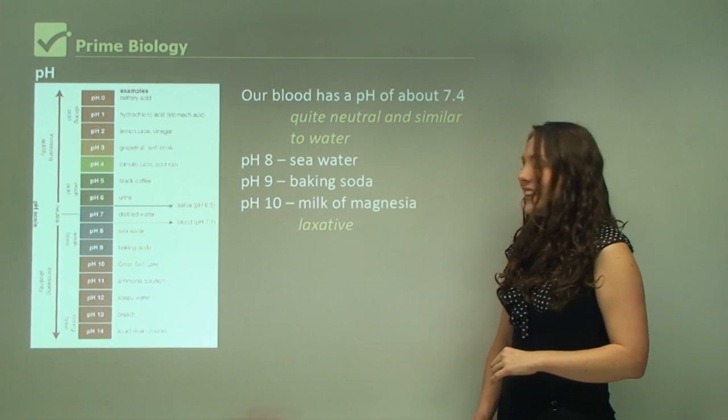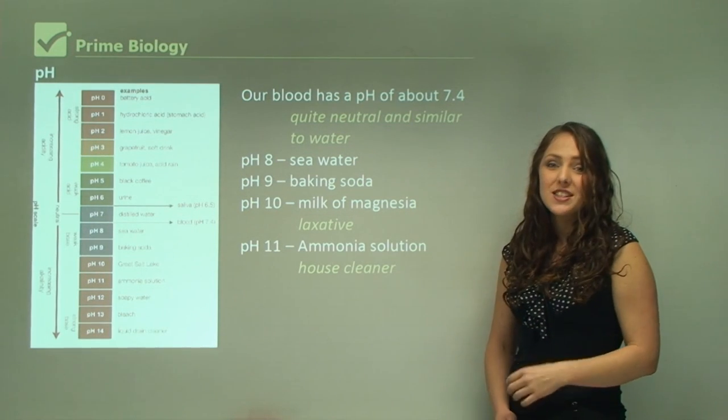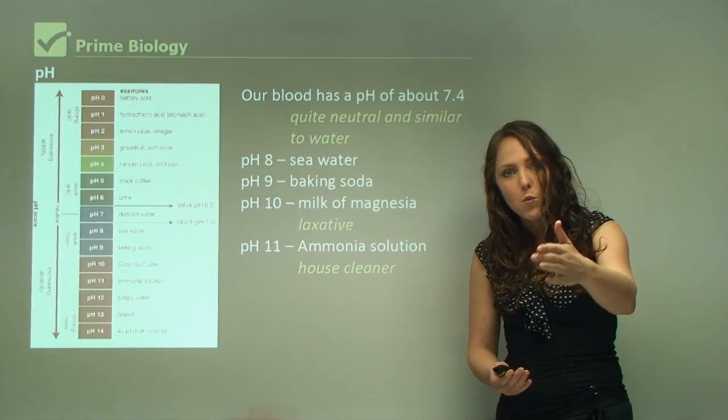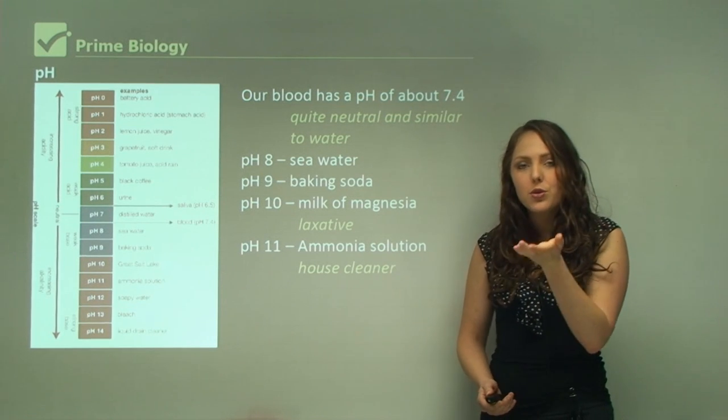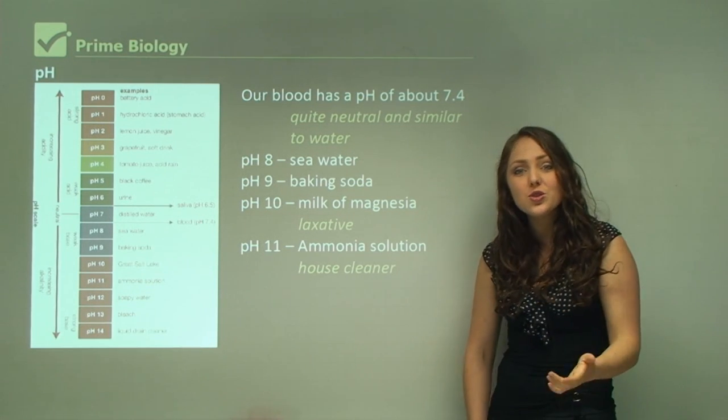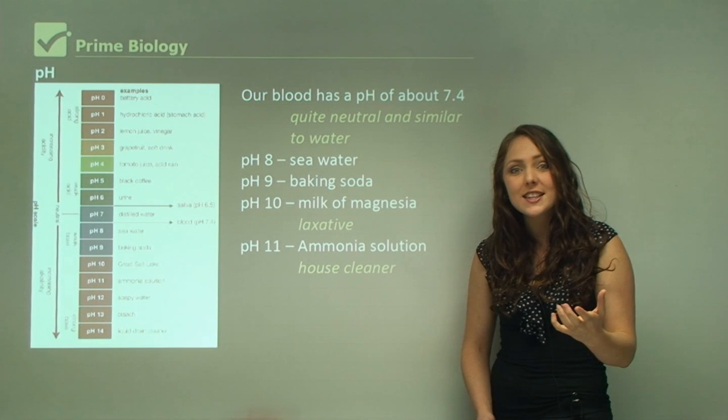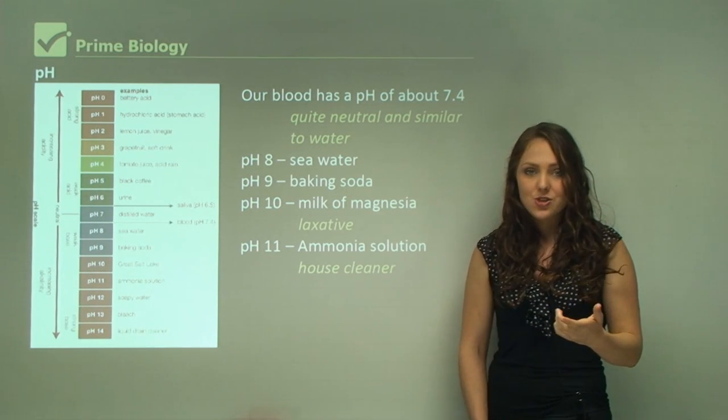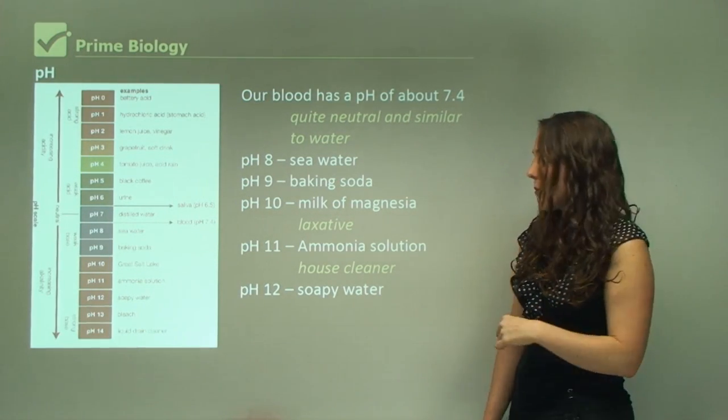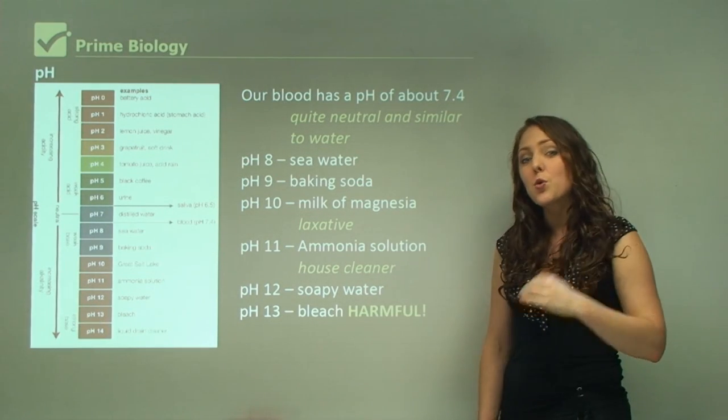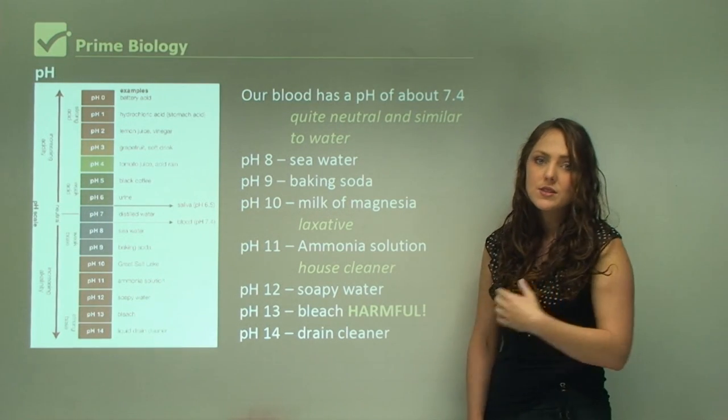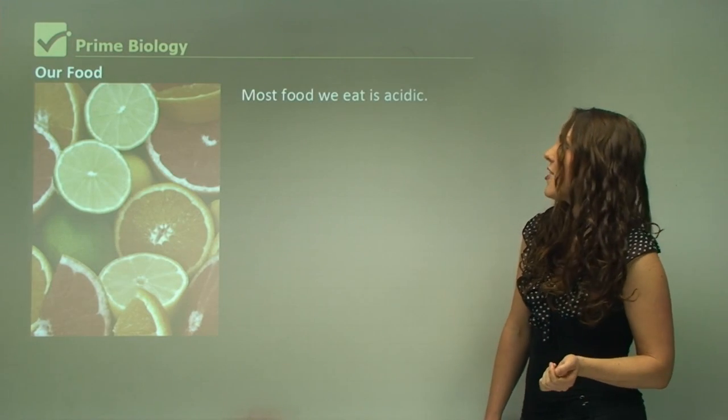At pH 8 there's sea water. pH 9 is baking soda. pH 10 is milk of magnesia, which is actually a laxative. pH 11 we have ammonia solution which is used as a house cleaner. You must be very careful when using this cleaner. You must waft the fume towards you because it can burn your nose and throat and damage your lungs. pH 12 is soapy water - the soap is okay for us, we use it on our skin. pH 13 is bleach which is quite harmful, and pH 14 is drain cleaner which is also harmful. These two are the harmful substances because they are the higher alkaline levels.